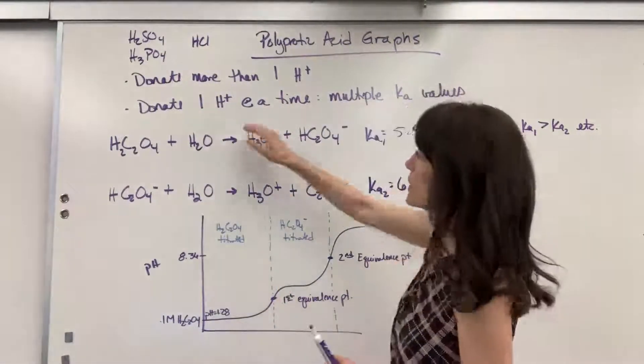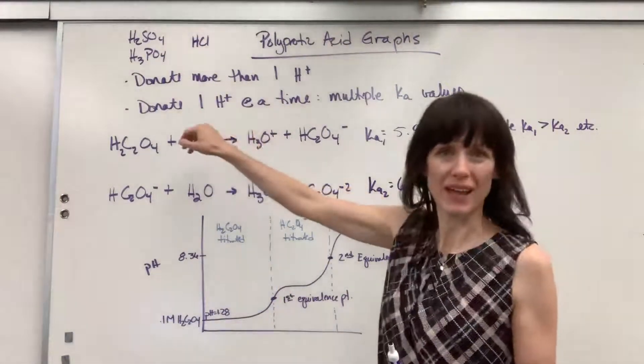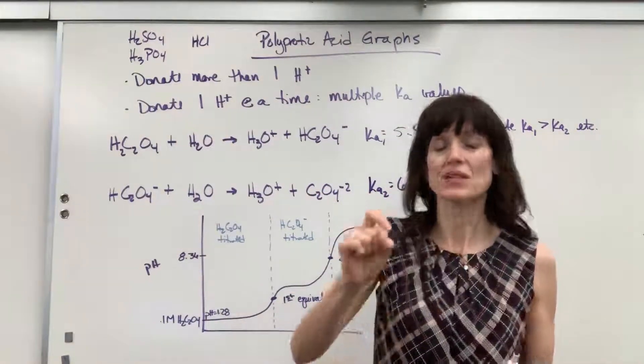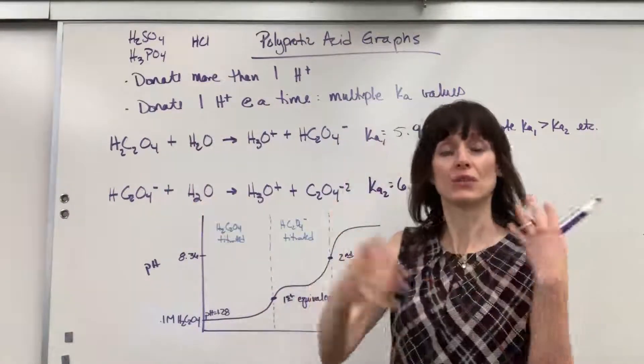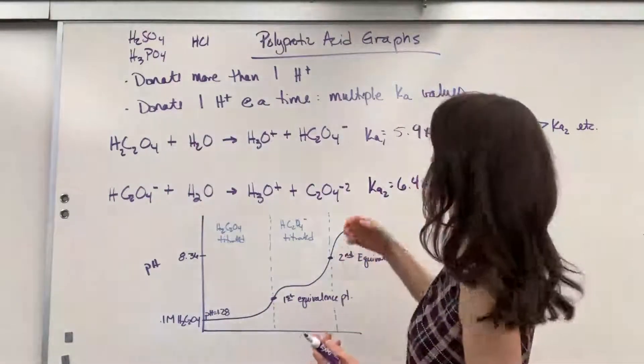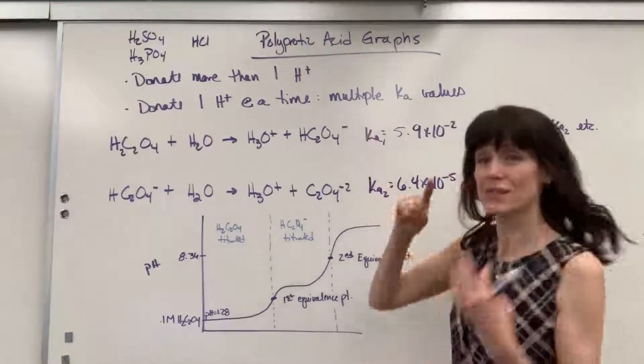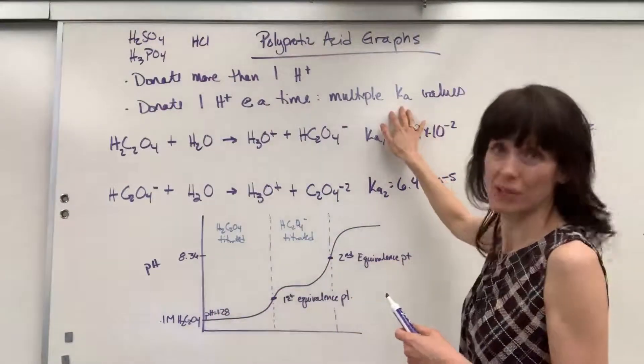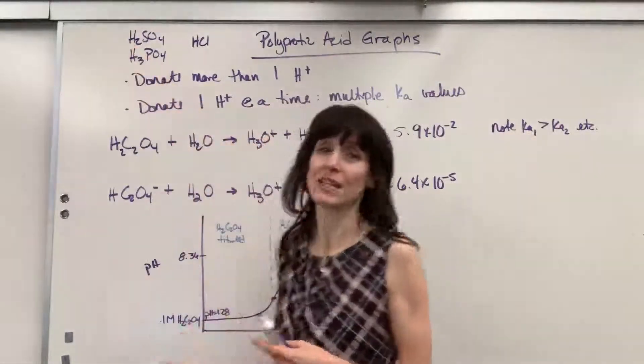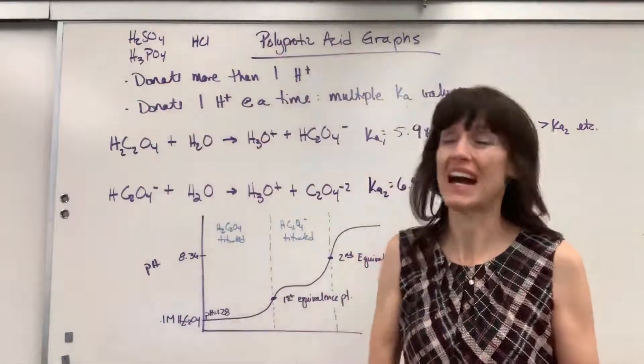Another little note, in these polyprotic acids, they donate one hydrogen at a time. So the first hydrogen will be completely donated, and then it goes to the second hydrogen, and it will be donated. As a result, because this happens in steps, there are going to be multiple Ka's. You just look at the number of hydrogens, and that's how many Ka values you're going to have.